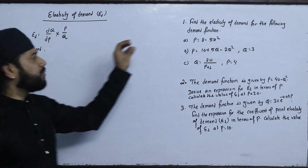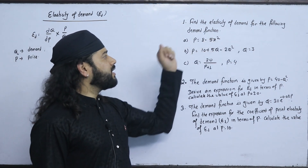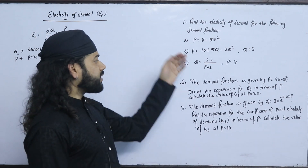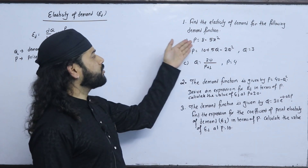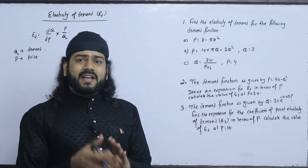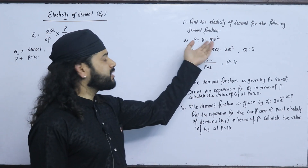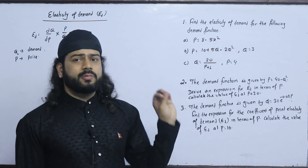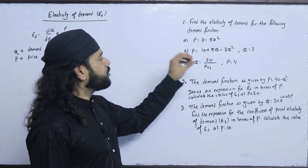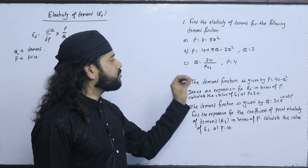This is the first question: Find the elasticity of demand for the following demand function. What is p equals to 8 minus 5x squared? The second question is p equals to 10 plus 5q minus 2q squared.